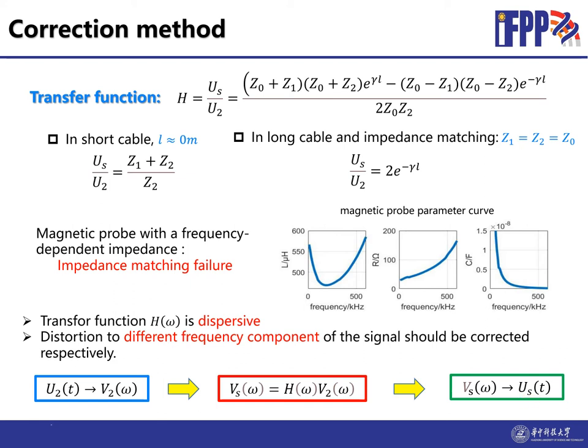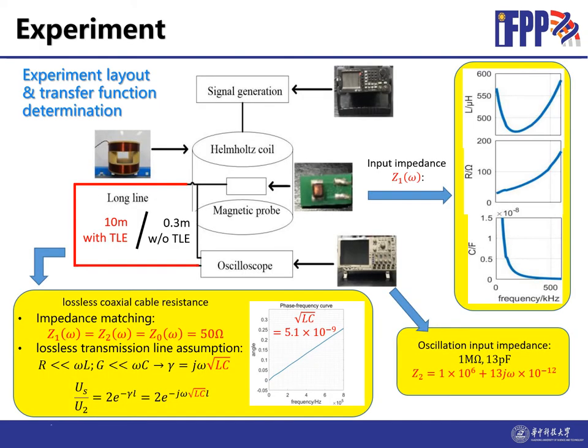Then we will show the verification in the experiment. The experiment layout is in this schematic. The time-varying magnetic field is generated by the Helmholtz coil driven by signal generation. A magnetic probe picks up the signal and the signal transmits to the oscilloscope by two kinds of cables. One is short, which we consider without the effect of transmission line. The second is the long cable with 10 meters, where the effect of transmission line is obvious.